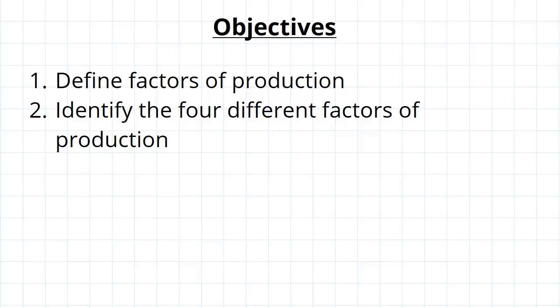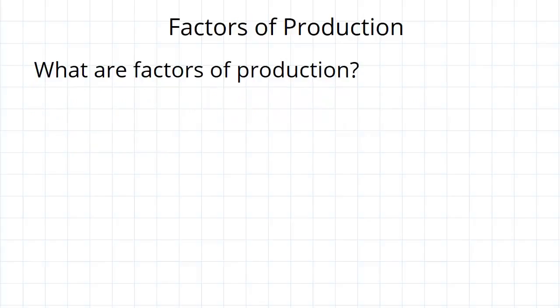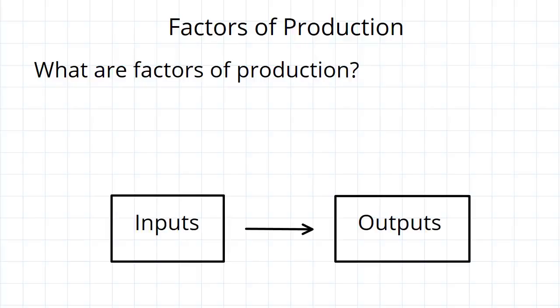So what are factors of production? Well, we know that the production process has two major components. You've got inputs, which are the resources that are used in order to create outputs.